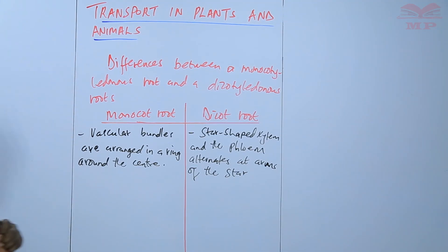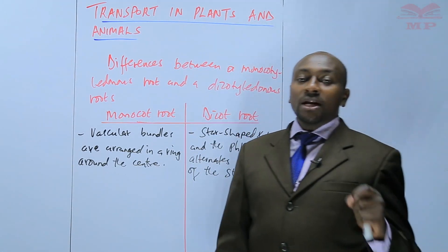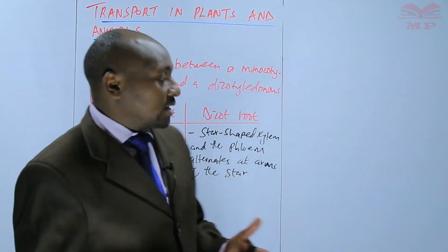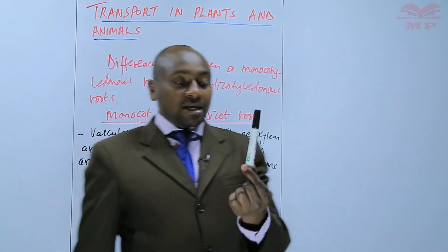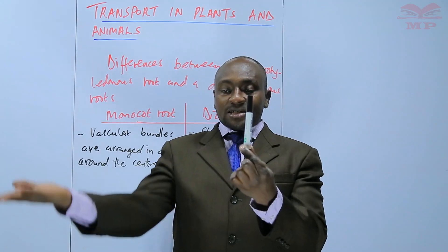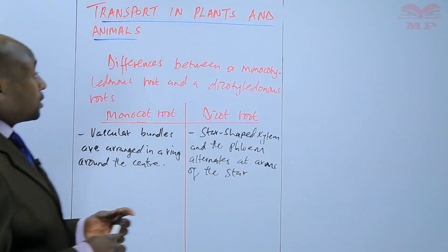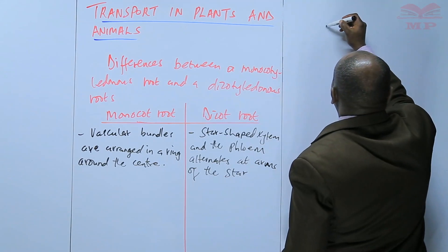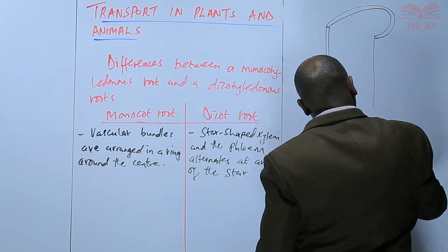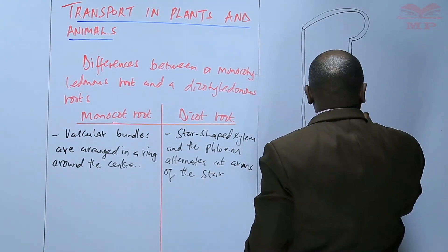That is the most fundamental difference between a monocotyledonous root and a dicotyledonous root. Now, to proceed, I would also like to discuss the longitudinal section through a dicotyledonous or monocotyledonous root. A longitudinal section is when you cut a vertical section, whereas a transverse section is when you cut a cross section. So when you cut a longitudinal section, you'll have something like this.